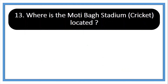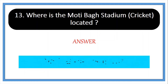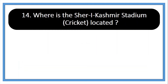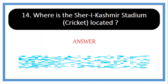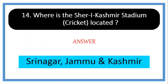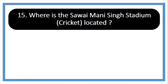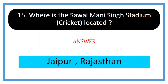Thirteen: where is the Moti Bagh Stadium (cricket) located? Answer: Vadodara, Gujarat. Fourteen: where is the Sher-e-Kashmir Stadium (cricket) located? Answer: Srinagar, Jammu and Kashmir. Fifteen: where is the Sawai Mansingh Stadium (cricket) located? Answer: Jaipur, Rajasthan.